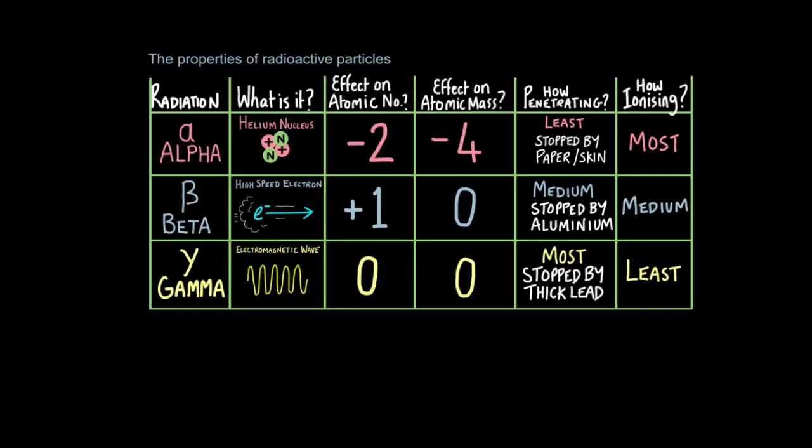So I said there are three particles that a nucleus can eject and we're going to look at these now. We're going to compare the properties of the different radioactive particles. This table summarises what you need to know very concisely but you will need to apply what you learn in this table to some unfamiliar examples and exams. So learn this well.